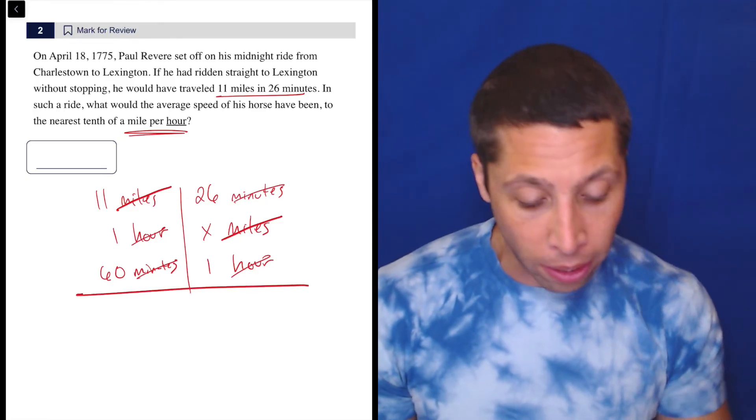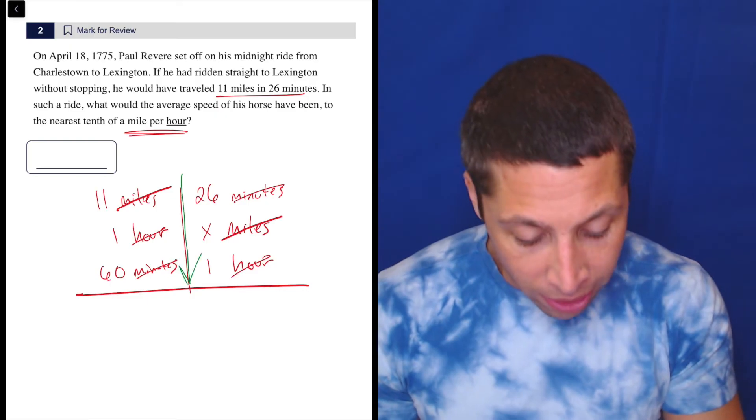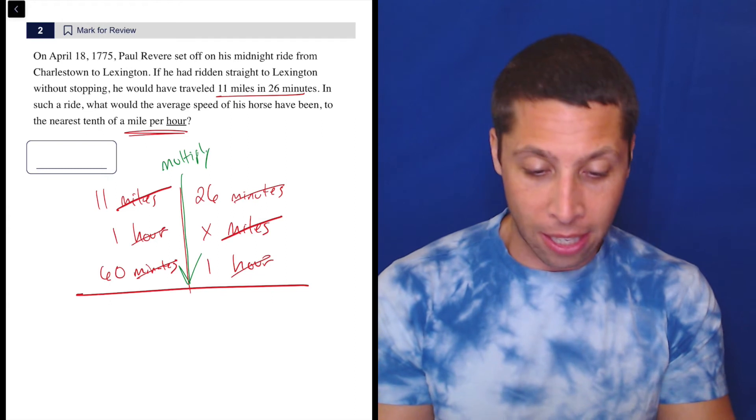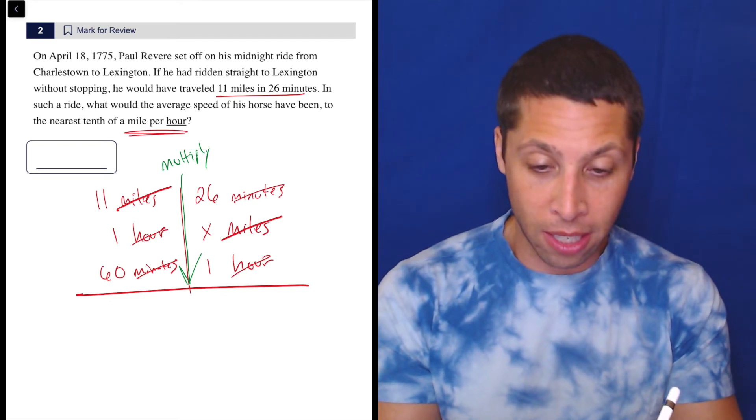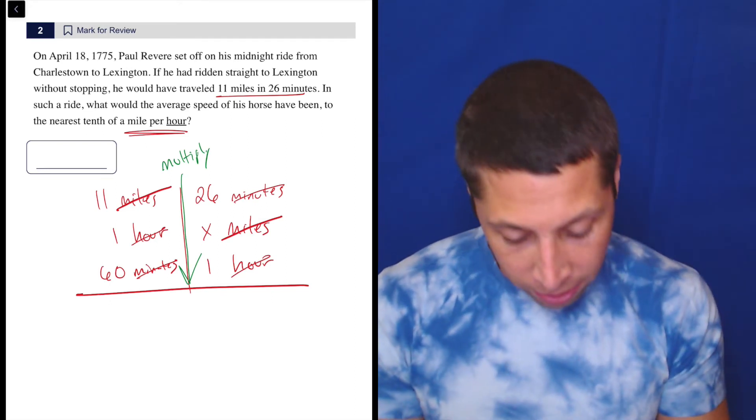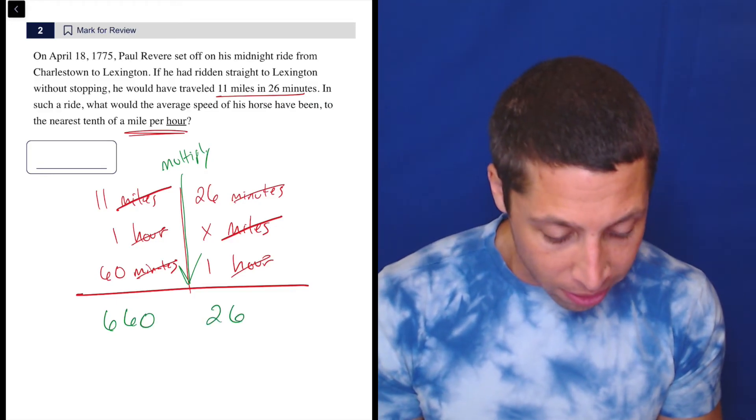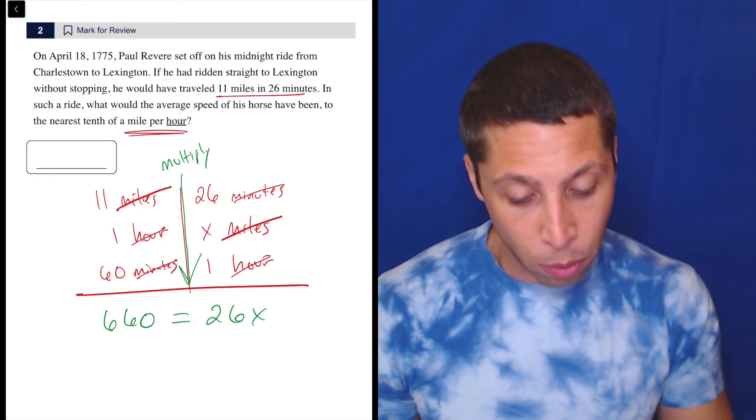Now we just draw a little line here and we go down the list and we multiply. So 11 times 60, calculator time, 11 times 60 times one technically, but who cares? So that's 660. And then 26X. So that's easy, 26X. Put an equal sign between them.